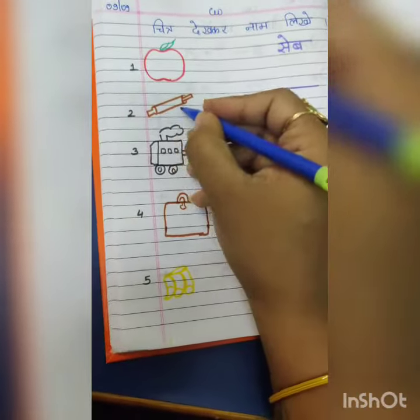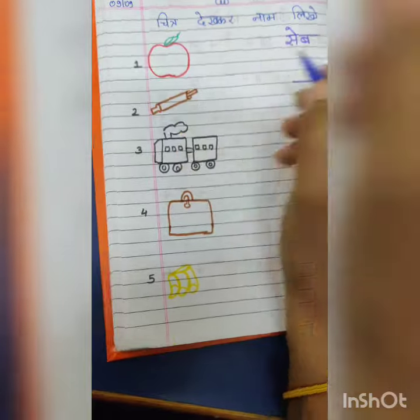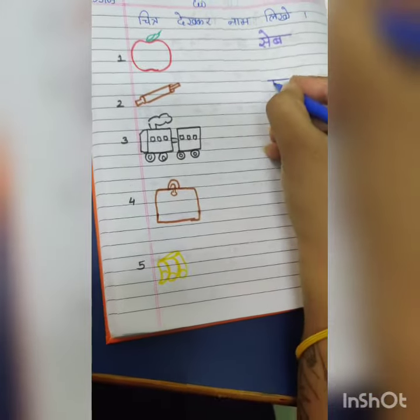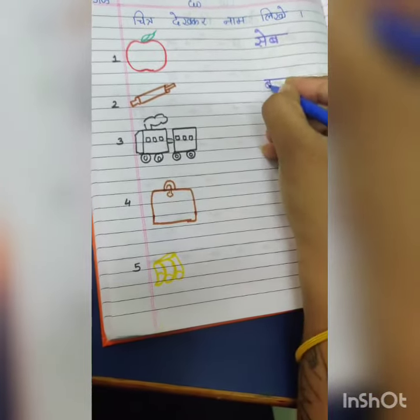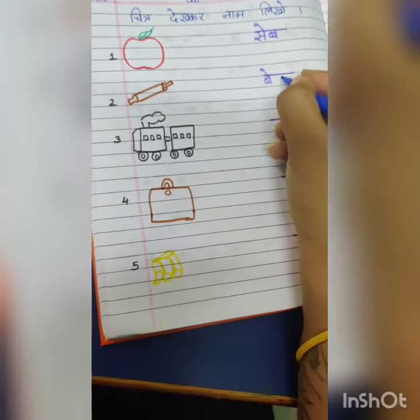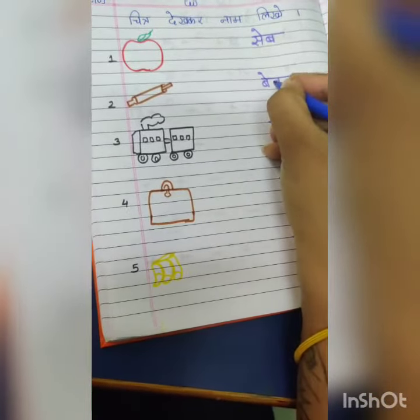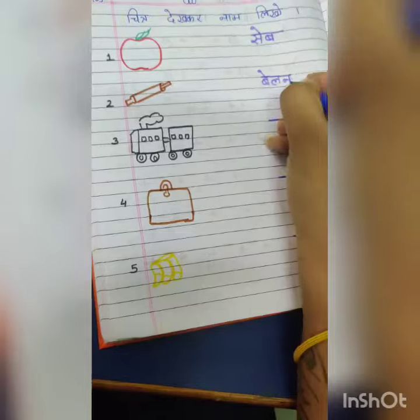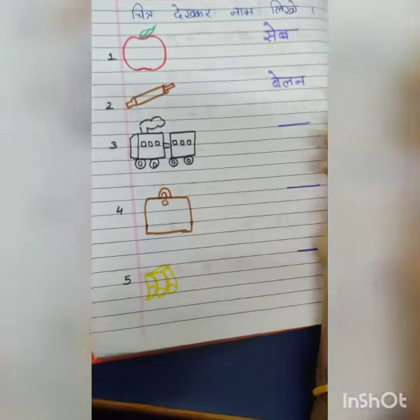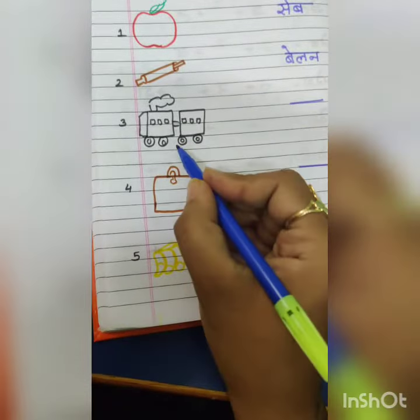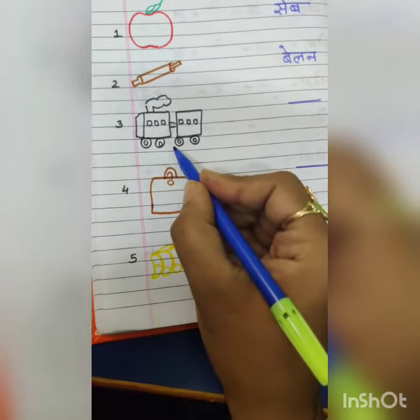And the next is belan: ba mein a ki matra, then la, then na — belan. And the third is rail.